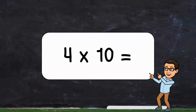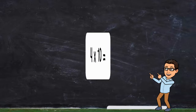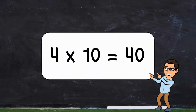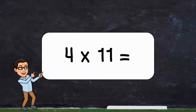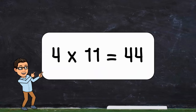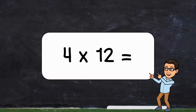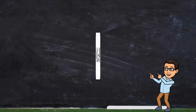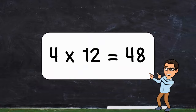Four times ten. Four times ten equals forty. Four times eleven. Four times eleven equals forty-four. Four times twelve. Four times twelve equals forty-eight.